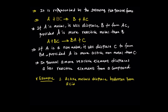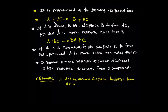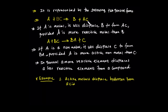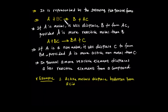Single displacement reaction is represented by the following two general forms. Let's say A reacts with BC — it gives us B and AC. A is a metal, that means A will displace B.